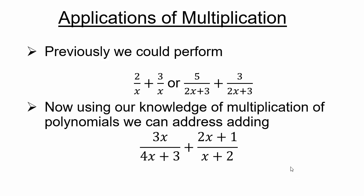So consider 3x over 4x plus 3, plus 2x plus 1 over x plus 2. These do not have like units right now. So how can we create equivalent fractions and make use of our multiplication? That's what we're going to study next.